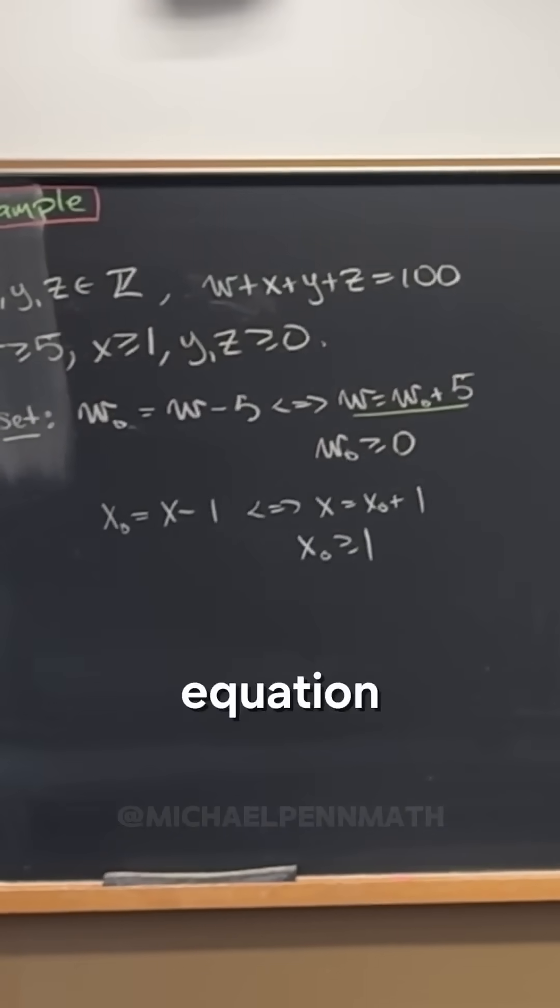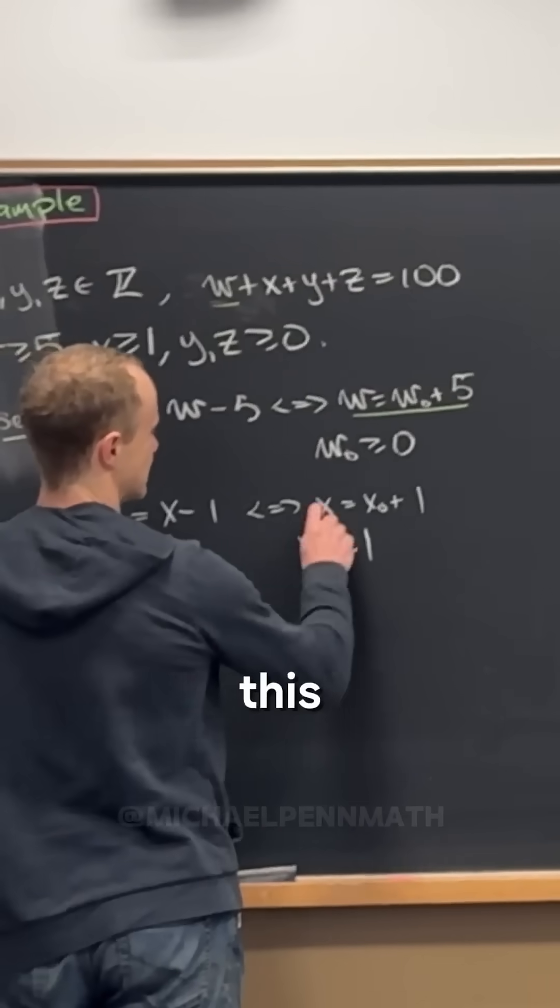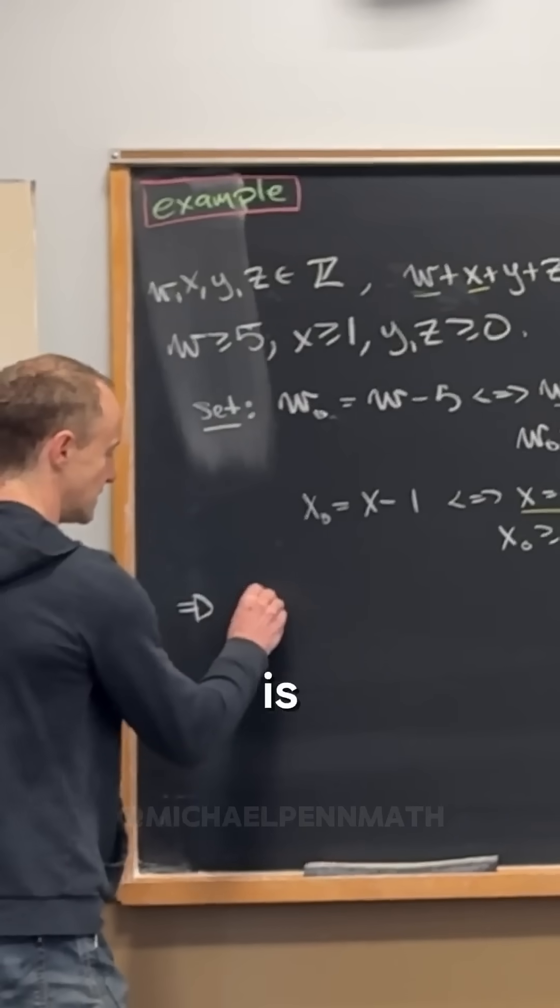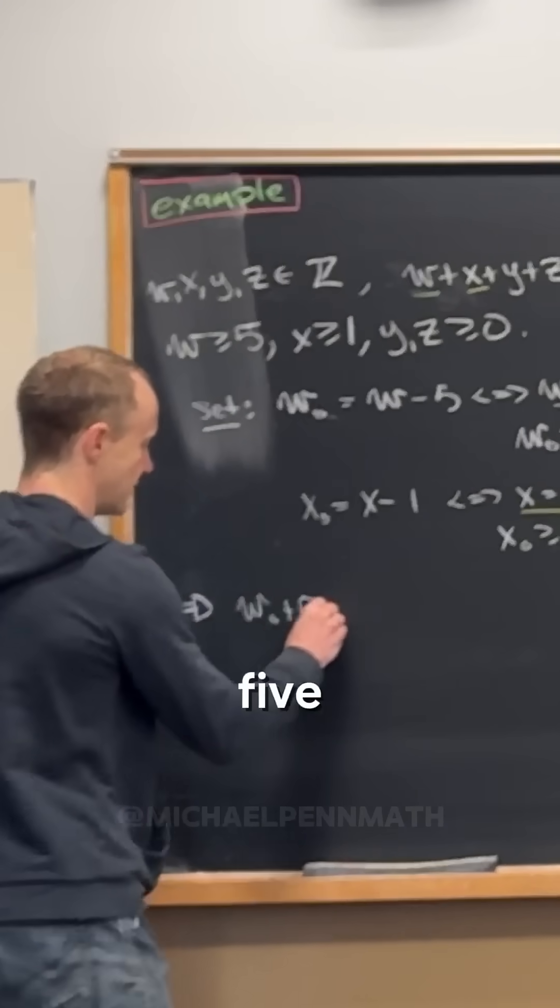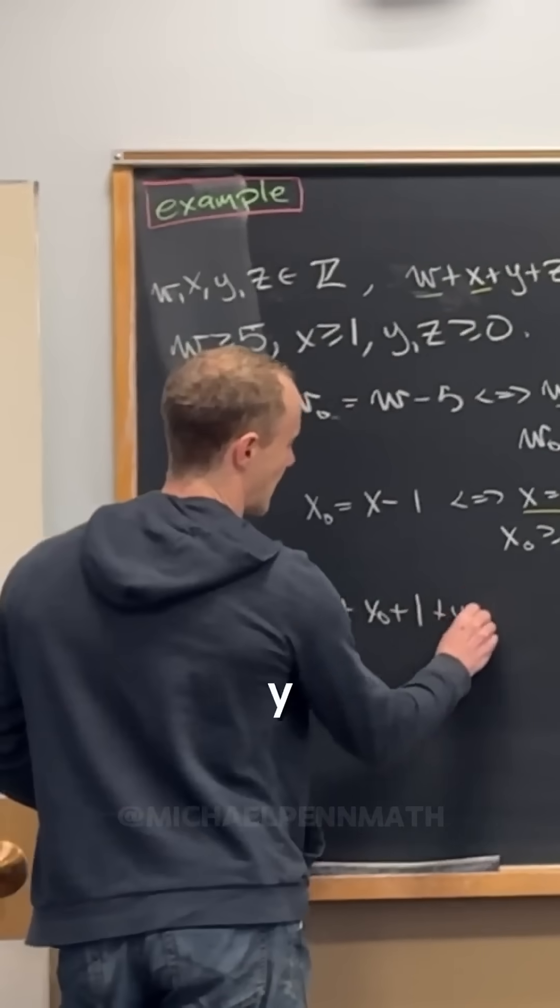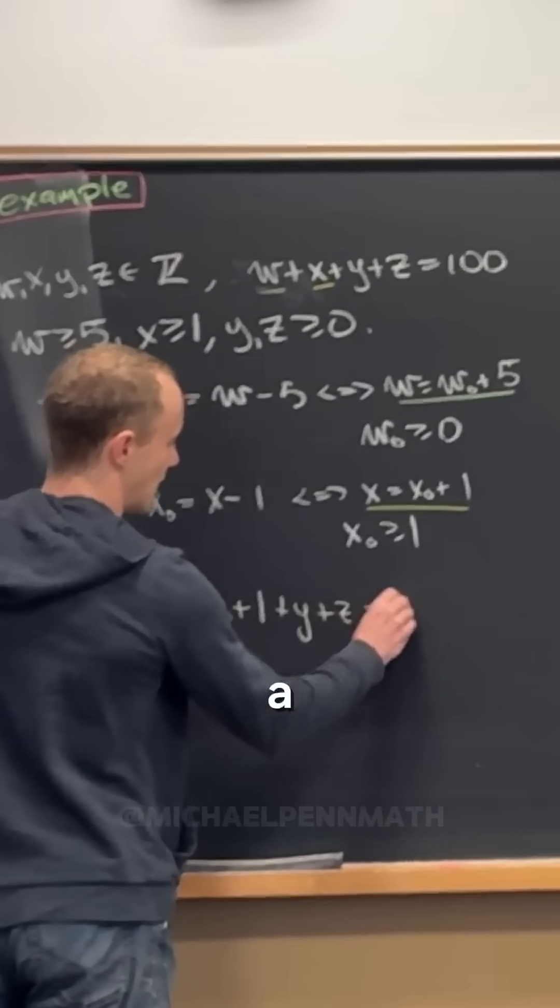So let's substitute this w into our original equation, and let's substitute this x into our original equation right here. So that gives us a new equation, which is w naught plus 5 plus x naught plus 1 plus y plus z equals 100.